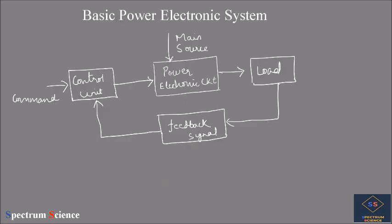Now let us look at the basic building block of a power electronic system. It consists of an input supply, which is the main source fed to the power electronic circuit. The circuit contains semiconductor switches like IGBT and MOSFET. The output is delivered to the load, and a feedback signal from the load is given to the control unit, which can be a PLC or microcontroller.